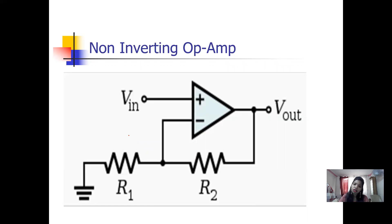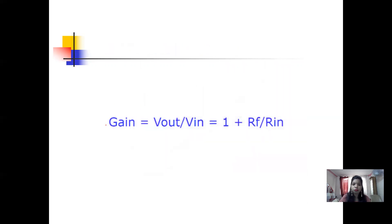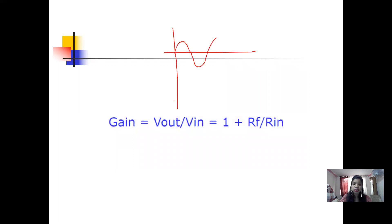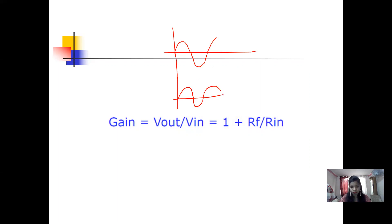For the non-inverting op-amp, the gain expression is 1 plus R_f over R_in. If you give this input you will get the same polarity output — there is no inversion. The output will be in the same form as the input, and you can say the gain is positive.